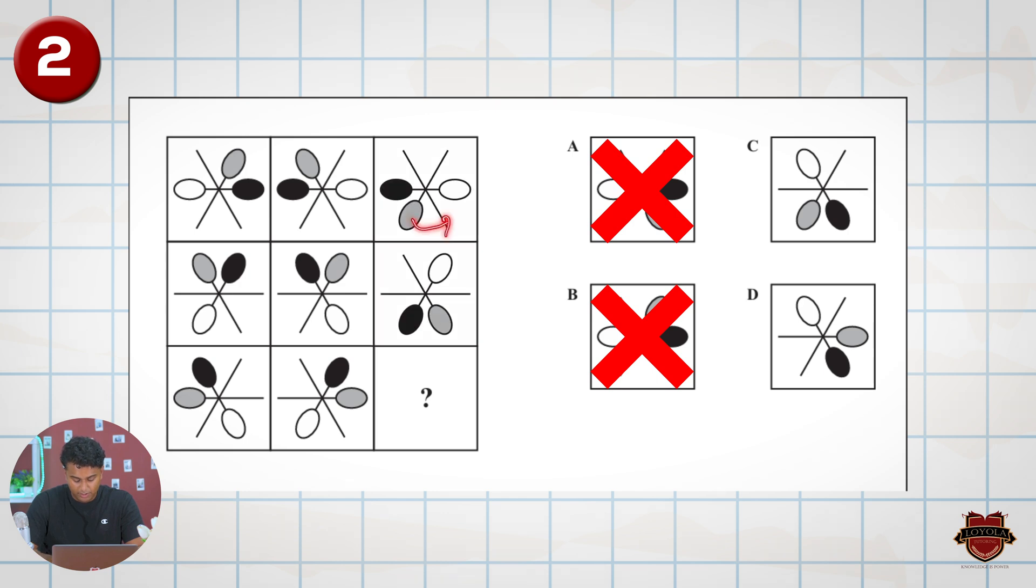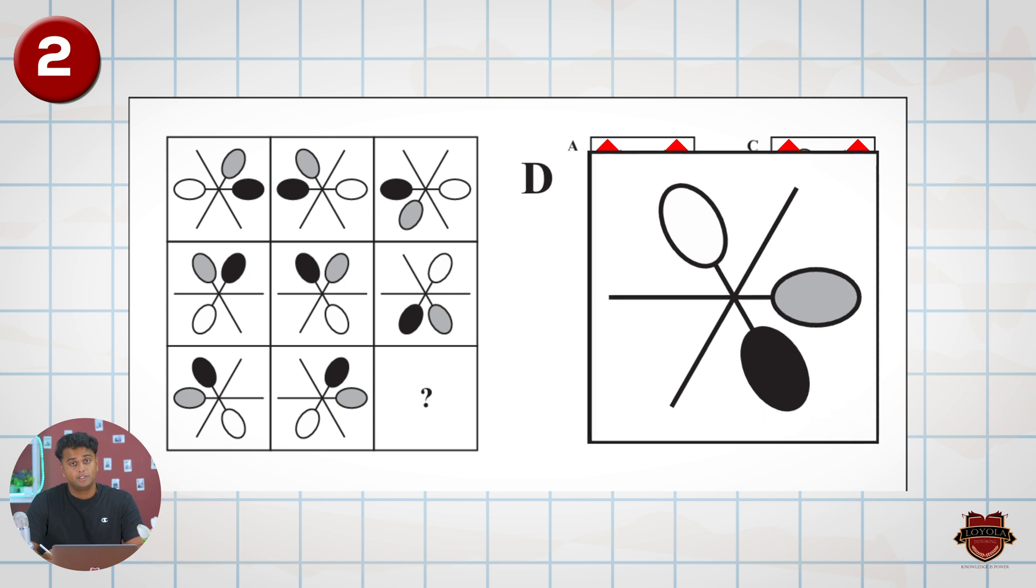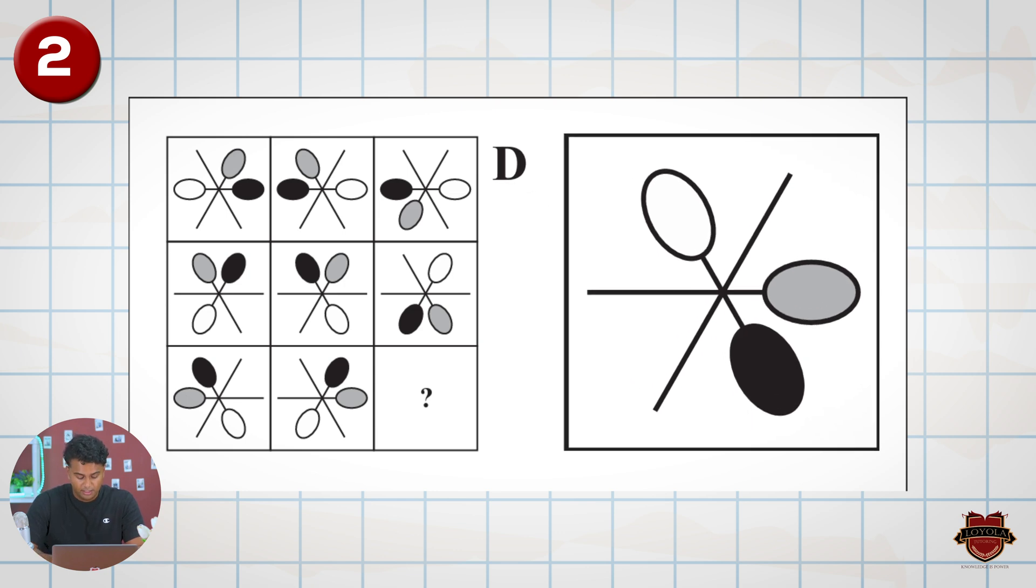The gray goes plus one and should go plus one again, so we can cross out C and we're left with D. But just to confirm, let's take a look at white, and white is going plus one plus one again which is also where white is in D. So the answer is D.